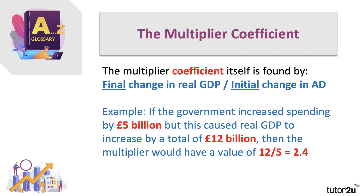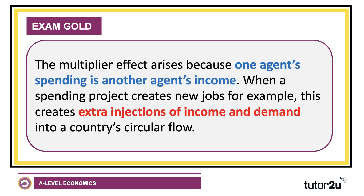Of course, the original £5 billion is included in the £12 billion — the difference is the extra £7 billion that comes from the knock-on effects. The multiplier effect comes about because one agent's spending — the government, for example, or overseas consumers — is another agent's income. When a spending project creates new jobs, that is a flow of income into households, creating an extra injection of demand and income into the circular flow.